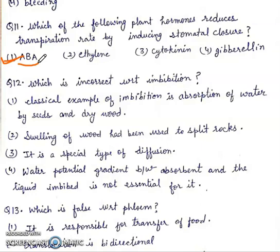Question 12: Which is incorrect with respect to imbibition? Four statements are there. We have to find the incorrect statement. First, classical example of imbibition is absorption of water by seeds and dry wood. Second, swelling of wood had been used to split rocks. Third, it is a special type of diffusion. Fourth, water potential gradient between absorbent and the liquid imbibed is not essential for it. First statement is true. Second statement is also true. Third statement is also true. Fourth is false. Because for imbibition, there should be a water potential gradient, then only imbibition will take place. So, without a water potential gradient, no imbibition will occur. So, right answer is fourth. It is the incorrect statement.